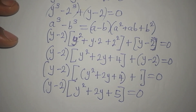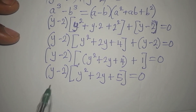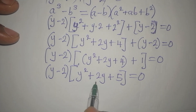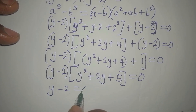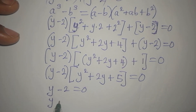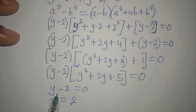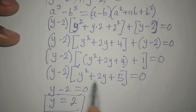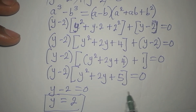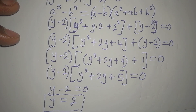So either Y minus 2 equals zero, or Y² plus 2Y plus 5 equals zero. From Y minus 2 equals zero, we get Y equals 2. Let's hold that and continue to solve the quadratic expression.